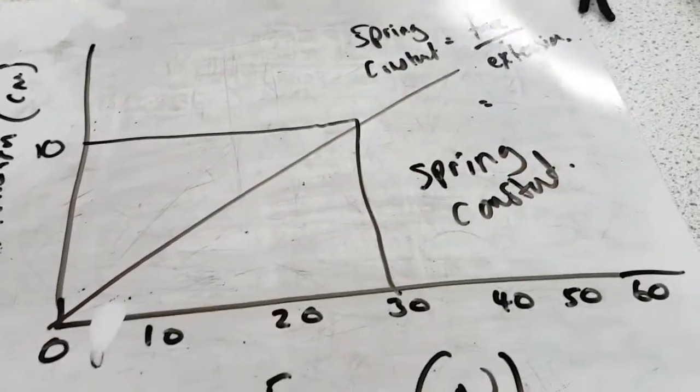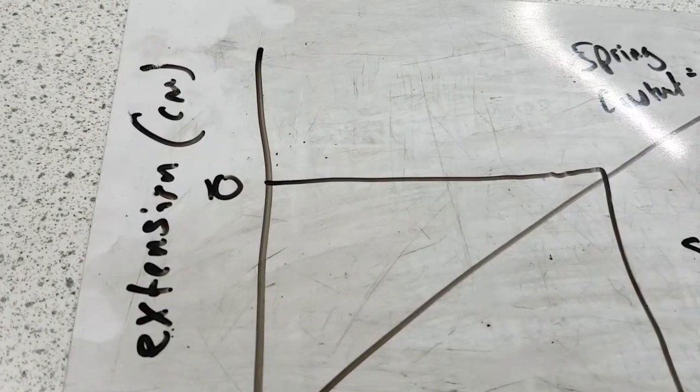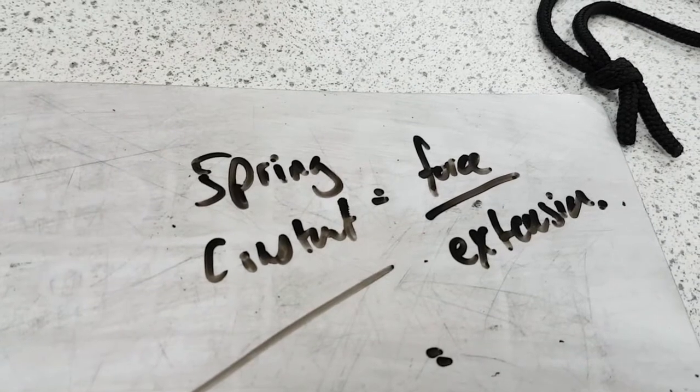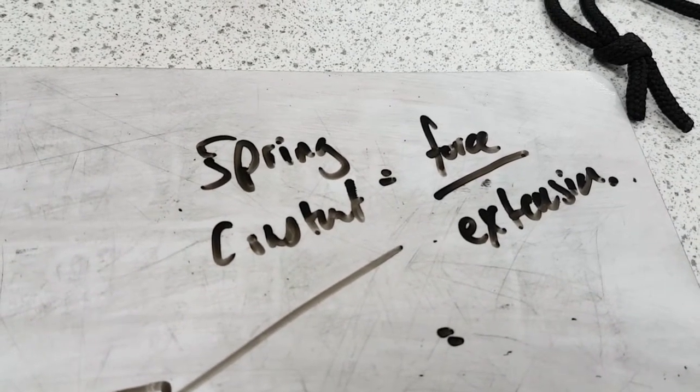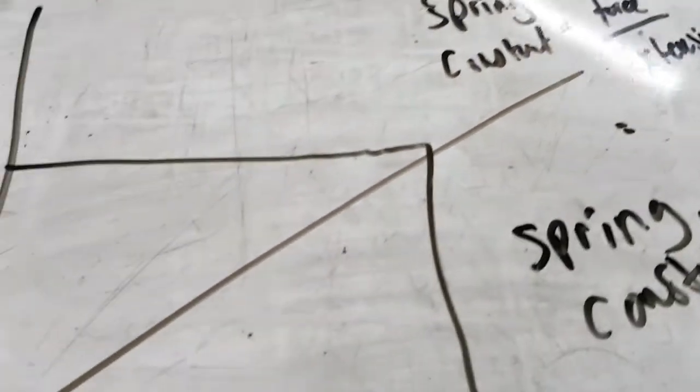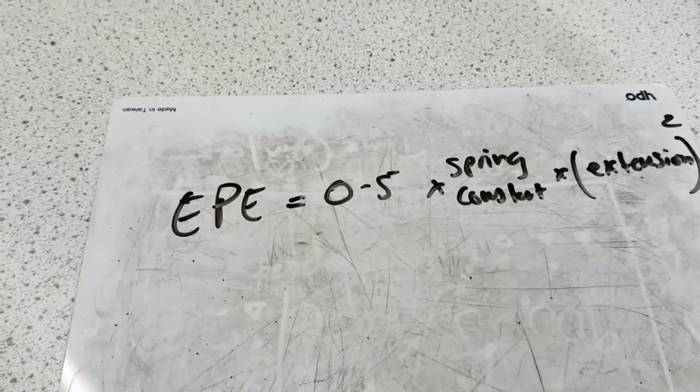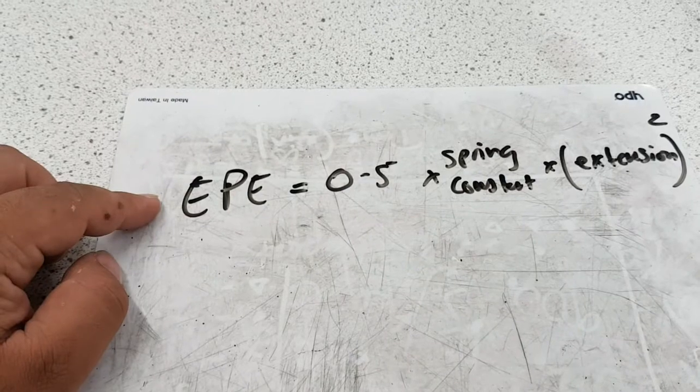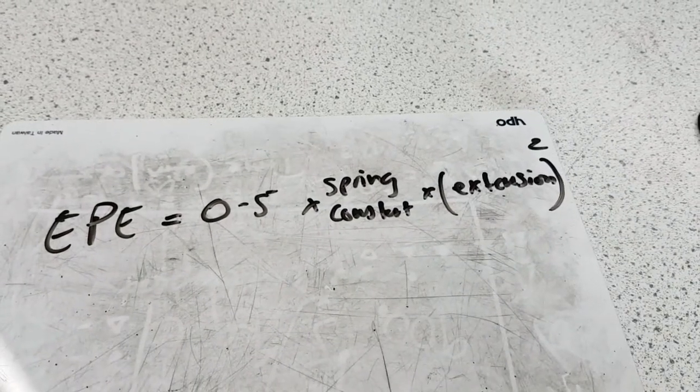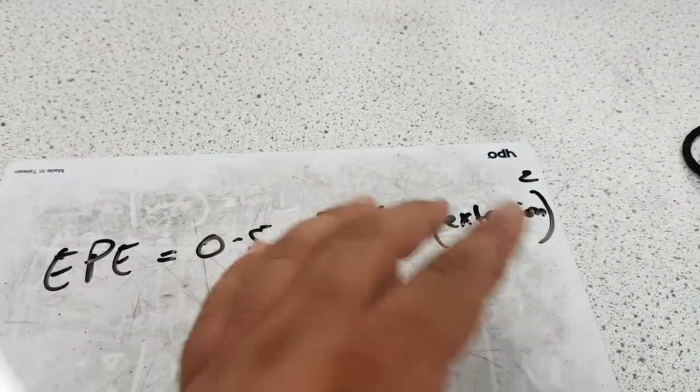To work out the spring constant, we take the force. In this case, I've just randomly taken 30 newtons. You go up to the gradient line and see where it crosses on the extension. I've made it up and said it's 10 centimeters. So spring constant equals 30 newtons divided by 10 centimeters, which will give you a spring constant of 3 newtons per meter. Then you can use another equation to work out loads of things. Elastic potential energy equals 0.5 times your spring constant times your extension squared. Don't forget, it's extension squared.